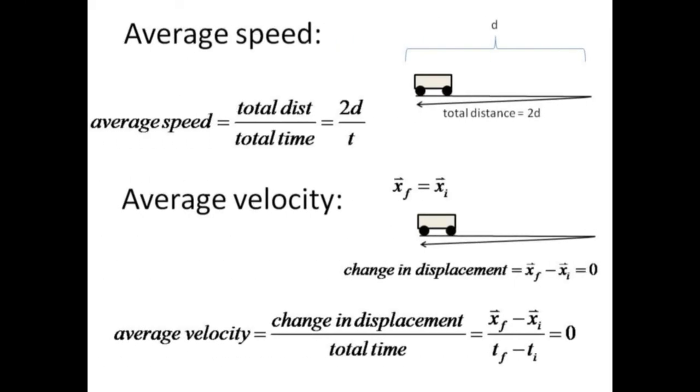Let's use the same data to distinguish the difference between speed and velocity. Now, average speed is defined as the total distance traveled divided by the total time that transpires.